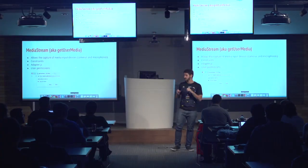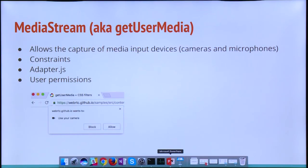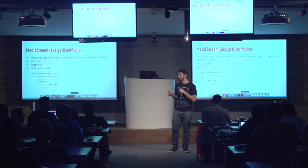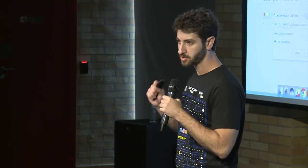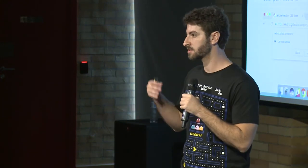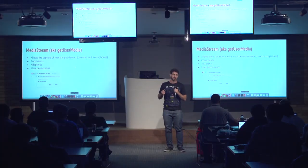Because the WebRTC specification is not yet complete, not all the constraints work on all the browsers. There is a recommended workaround — using adapter.js, which is a shim that helps us handle this situation between browsers. Also, MediaStream handles the user permissions. When you call the getUserMedia API, the browser will ask the user for permissions. The user has to manually click Allow in Chrome to grant access to the devices. This is important because WebRTC and the browser are protecting us from being spied on.